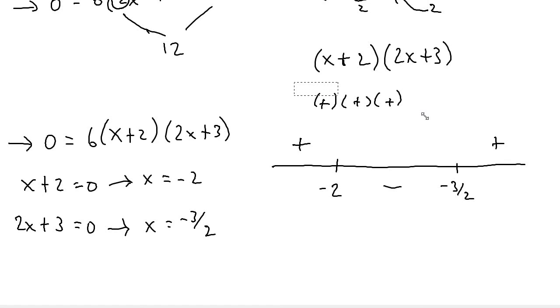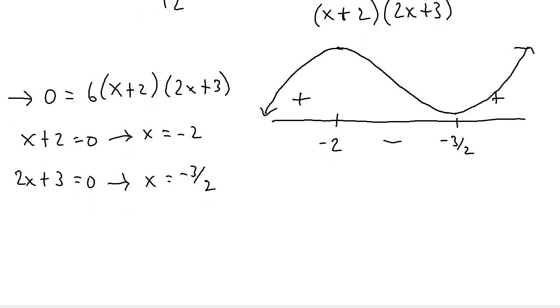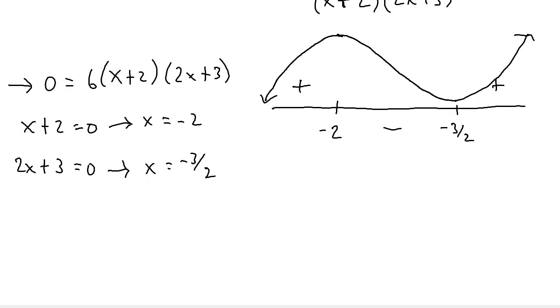So now what I can do, now that I've found all my signs, is I can make the function, or create the function, or at least draw it. So here's a positive. And since the derivative is negative, the function will decrease there. And then since it's positive, it will go back up and increase once again. So now that I've drawn my function, I can label where the values are increasing and decreasing.